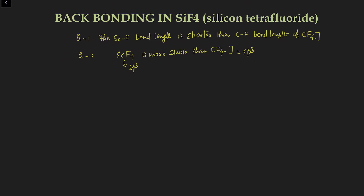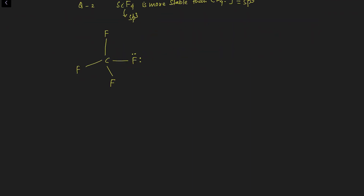To understand this, first draw the structure of CF₄ and SiF₄. Each fluorine atom has three lone pairs of electrons. In CF₄, carbon uses all of its valence electrons, so there is no lone pair on carbon. The silicon tetrafluoride structure is also tetrahedral.